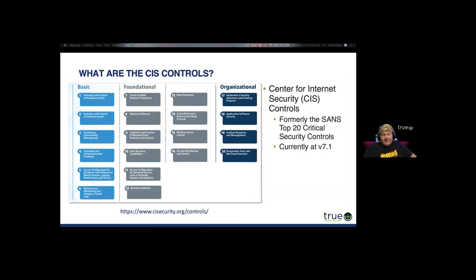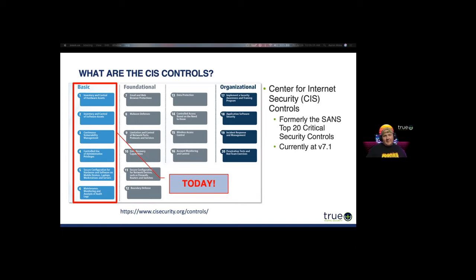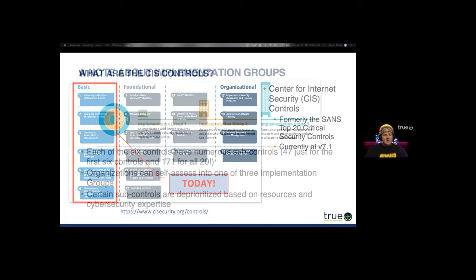The CIS controls were originally the SANS Top 20 Critical Security Controls. CIS stands for Center for Internet Security. Currently we're at version 7.1 as of the time of this writing back in February — it could be updated to 7.2 or beyond now. The controls we're talking about today are the basic security controls: inventory and control of hardware assets, software assets, continuous vulnerability management, controlled use of administrative privileges, secure configuration for hardware and software, and maintenance and monitoring of audit logs. These first six, if you get right, make it so much harder for an attacker on your network.